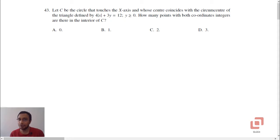This question is based on coordinate geometry. Let C be the circle that touches the x-axis and whose center coincides with the circumcenter of the triangle defined by 4 into mod x plus 3y equal to 12, y greater than or equal to 0. How many points with both coordinates integers are there in the interior of C? 0, 1, 2, 3.